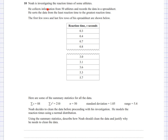In this question, Noah is investigating the reaction times of 50 athletes and records data in a spreadsheet, sorted from least to greatest reaction time. Summary statistics are given: the sum of all reaction times, the sum of squared values, n equals 50, standard deviation of 1.05, and a range of 5.4. Noah decides to clean the data before proceeding and models reaction times using a normal distribution.